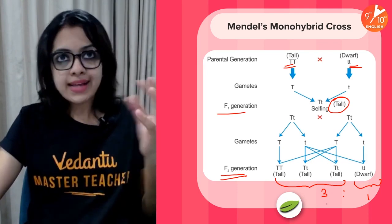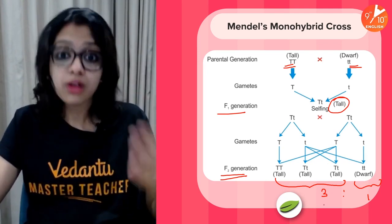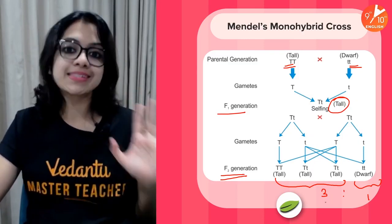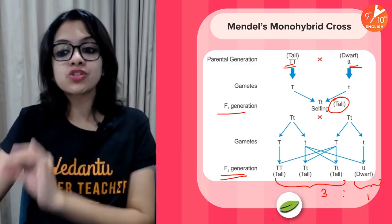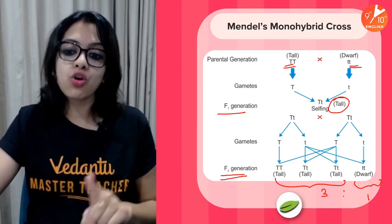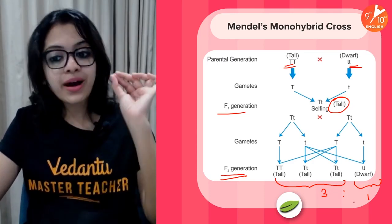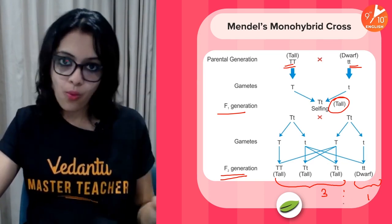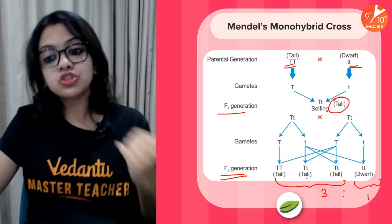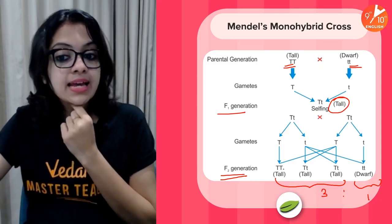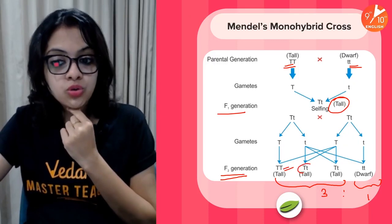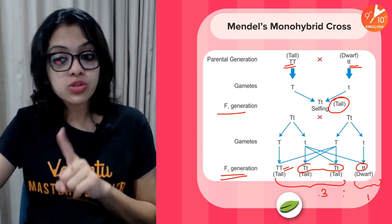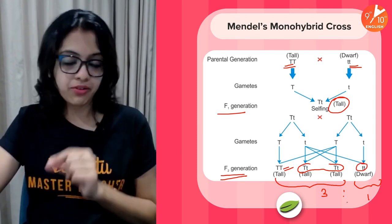Mendel then allowed the F1 plants to self-fertilize, and in the F2 generation — the second filial generation — he observed both tall and dwarf plants in the ratio of 3:1. Three expressed the dominant trait (tallness) and one expressed the recessive trait (dwarfness). Whichever of the seven character pairs Mendel studied, he got the same result. The phenotypic F1 ratio of a monohybrid cross is 3:1, and the genotypic ratio is 1:2:1.